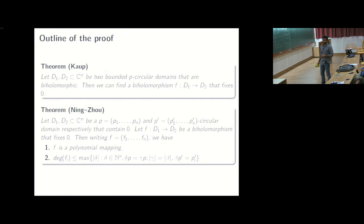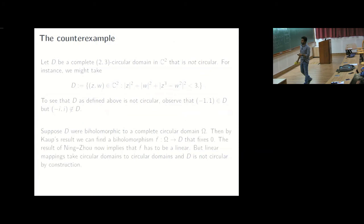Then this result, the previous result implies that by keeping track of the degrees that is involved, we'll be able to conclude that f has to be a linear mapping. But then d, we already checked is not a complete circular domain and that gives a contradiction. And that establishes the contradiction.